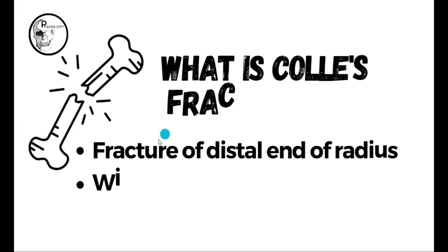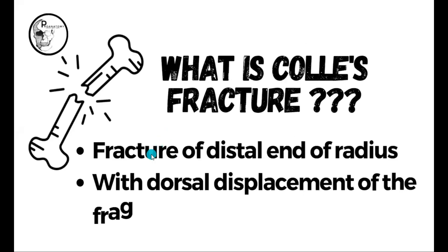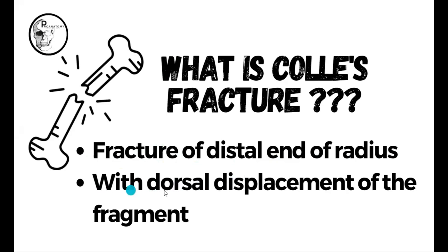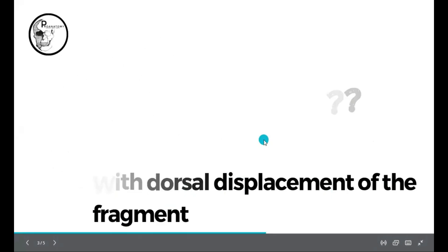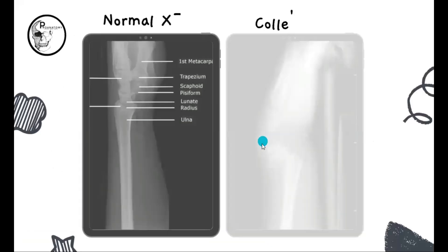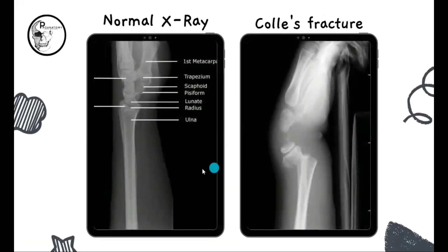So what is Colles fracture? That is the first question. The fracture of the distal end of radius with dorsal displacement of the fragment is termed as the Colles fracture. So let's see how it looks in an X-ray.